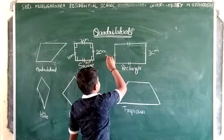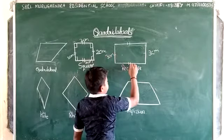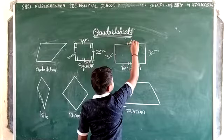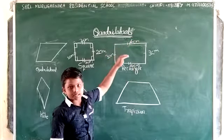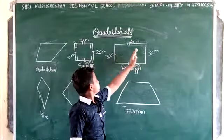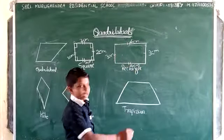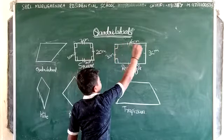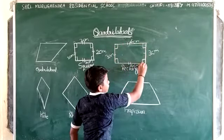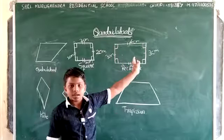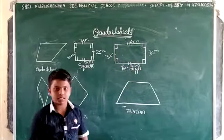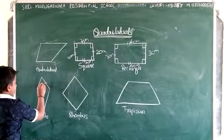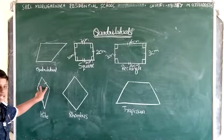Firstly, square. Square means all the sides will be equal. If this is two centimeters, this will be also two centimeters, this will be two centimeters. Here all the sides are equal. So this is known as square and the angle should be 90 degrees. In this figure, the angle should be 90 degrees only.